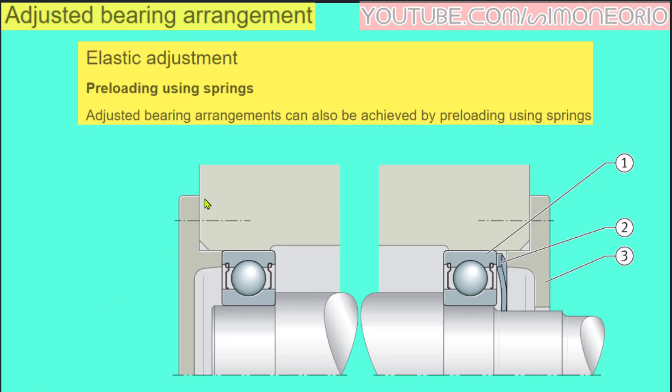There is a third possible arrangement, and is called Elastic Adjustment, using preloading springs. Adjusted Bearing Arrangements can also be achieved by preloading using springs.